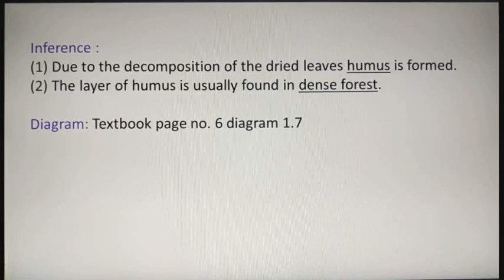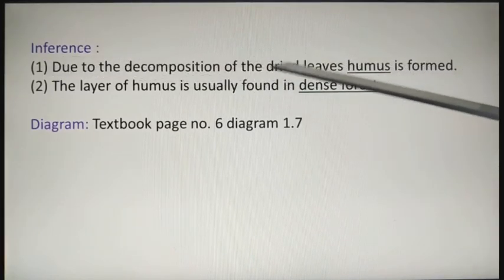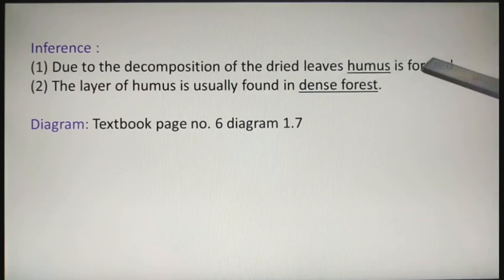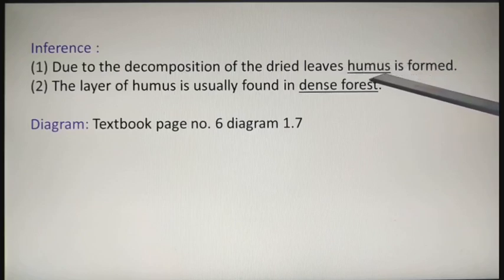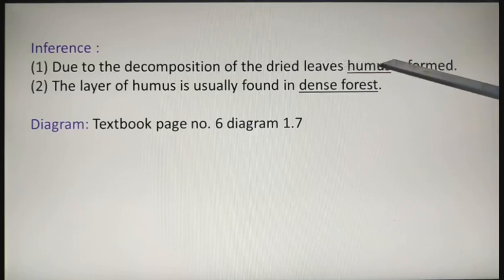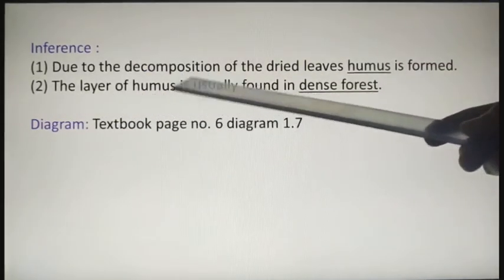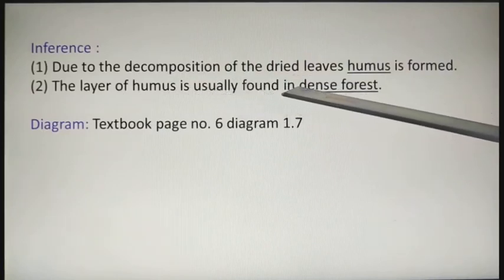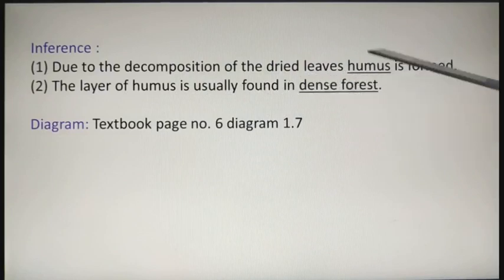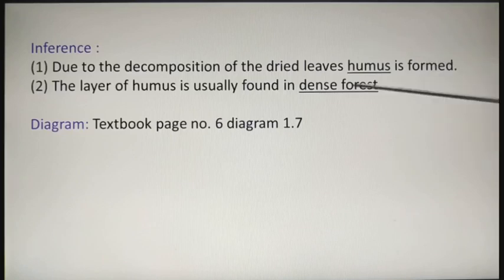Now the inference, which means the result of this experiment. The first inference: due to decomposition of dried leaves, humus is formed. The dried leaves are decomposed by bacteria and other microorganisms and converted to humus. The second inference: the layer of humus is usually found in dense forests. These answers are found on textbook page number 6.